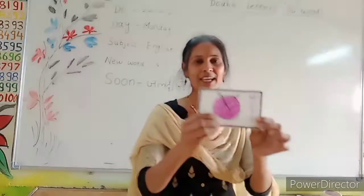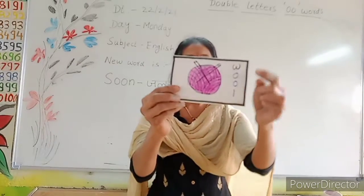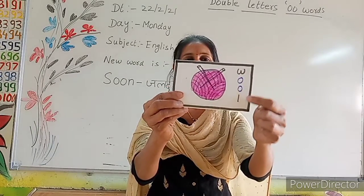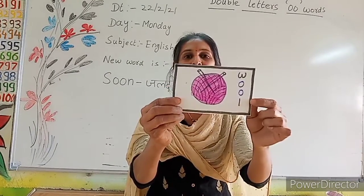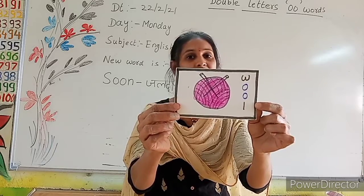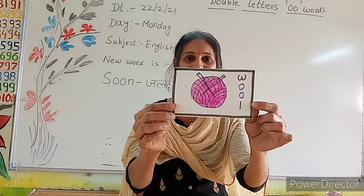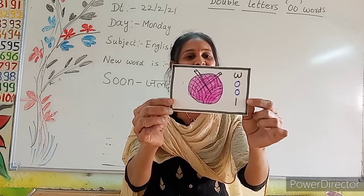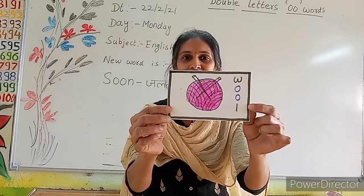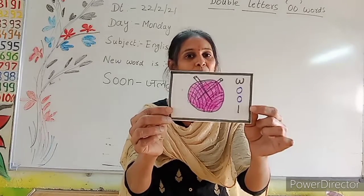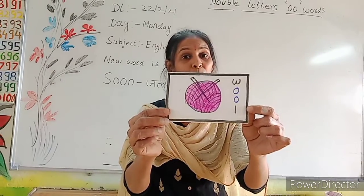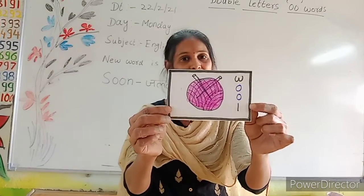Ye bata ye, ye kya hai? W-O-O-L. Wool means oon — jis mein sweater bandhte hain na. Aur iska sound kya sa hai? Double O means badi oo. Oo ka sound hai.